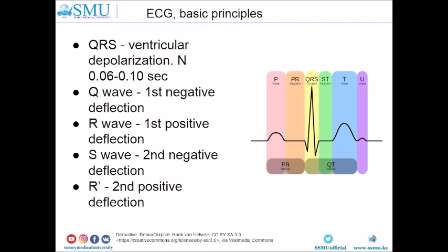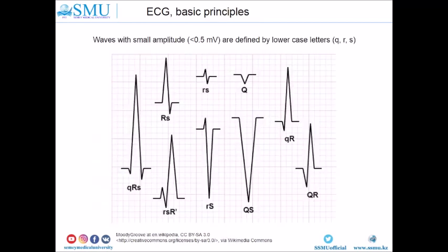During the assessment of the QRS complex, it is very important to recognize all patterns of QRS complex morphology in all leads. The first QRS complex pattern is called small q, large R, and small s. Another pattern is the RS complex, where R amplitude is high (more than 5 mm) and S amplitude is low (less than 5 mm). The small rs pattern has both R and S amplitudes less than 5 mm.